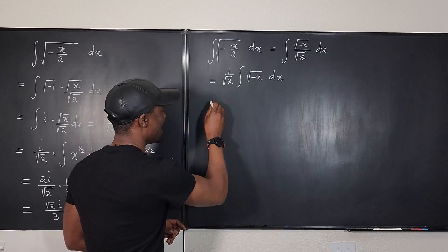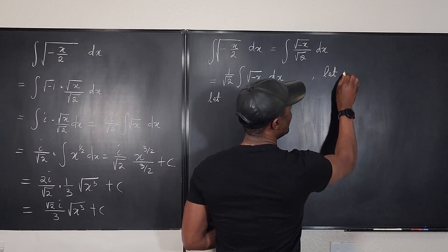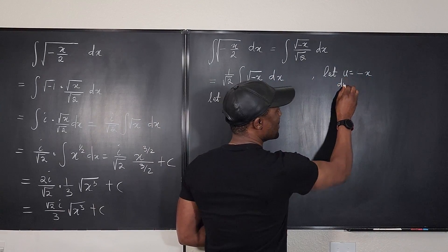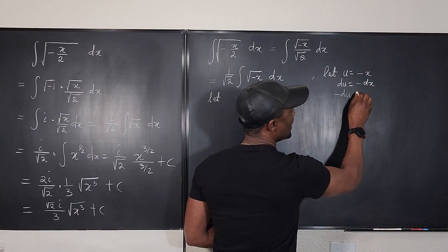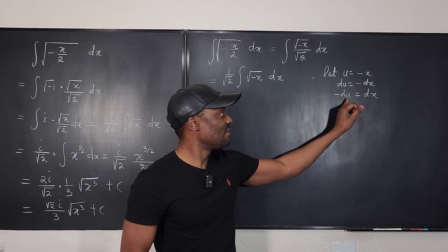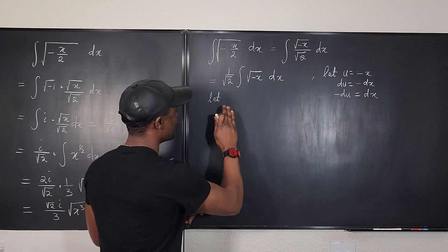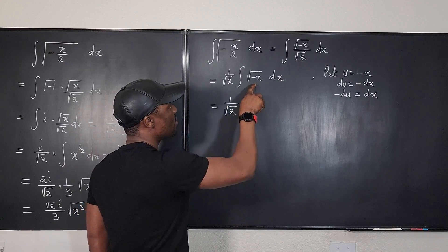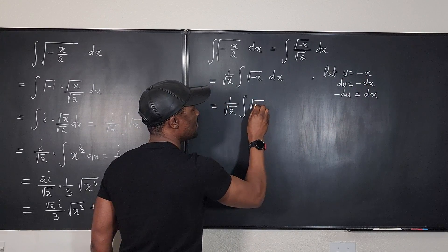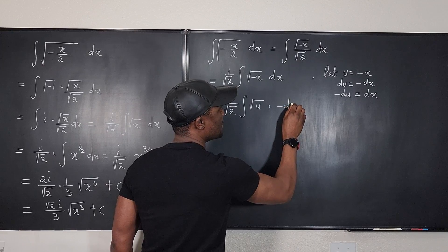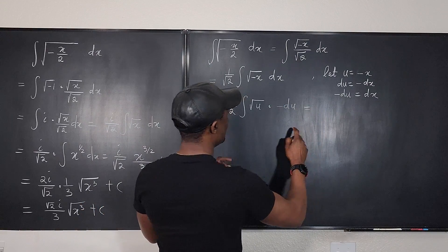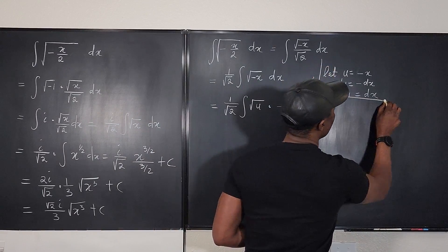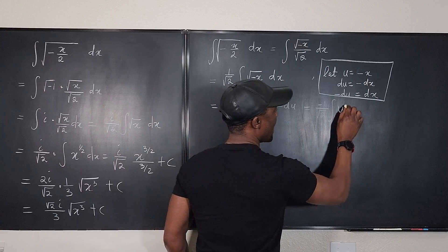Let u equal negative x. That means du equals negative dx, so negative du equals dx. I go and replace dx with negative du. So the expression becomes one over the square root of two times the integral of the square root of u — since u equals negative x — multiplied by negative du. Taking the negative out front, this is negative one over the square root of two times the integral of u to the one-half du.